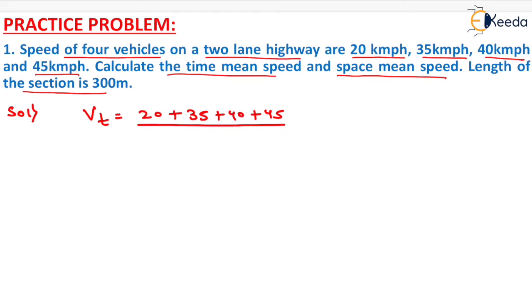On solving this, 20 plus 35 plus 40 plus 45 divided by 4, it will be equal to 35 km per hour. That will be the time mean speed.